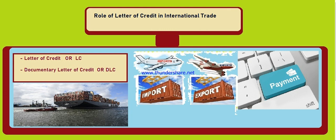When exporter and importer reach a conclusion, make a deal, and sign a contract, the importer will go to their bank and request them to establish a letter of credit in favor of the exporter. The importer provides all complete details: the exporter's name, their complete address, country name, product details, product price, etc. The importer's bank then establishes a letter of credit and submits it to the exporter's bank.